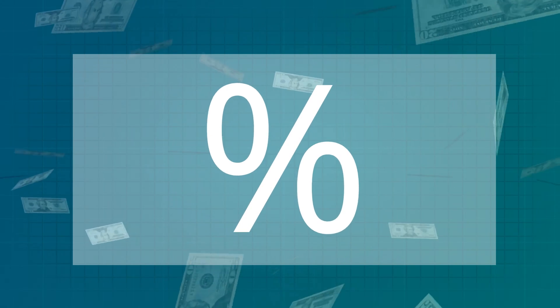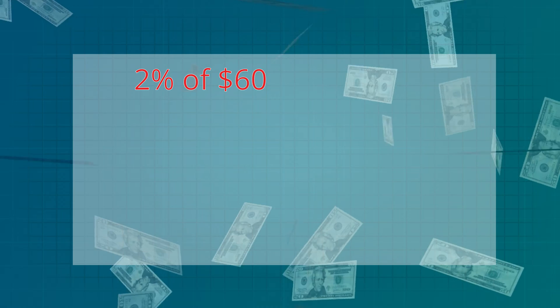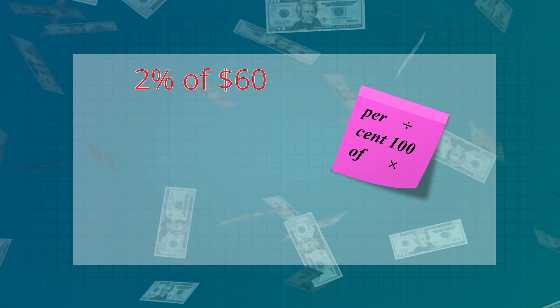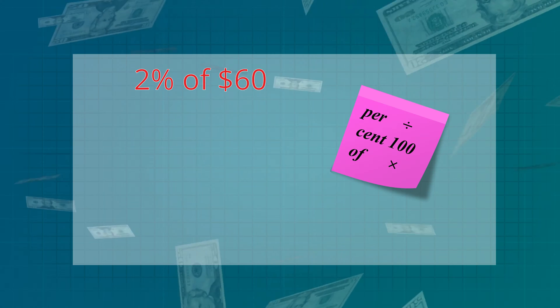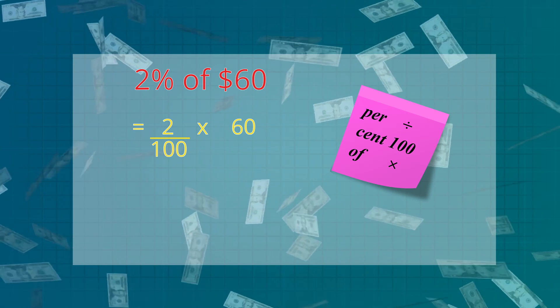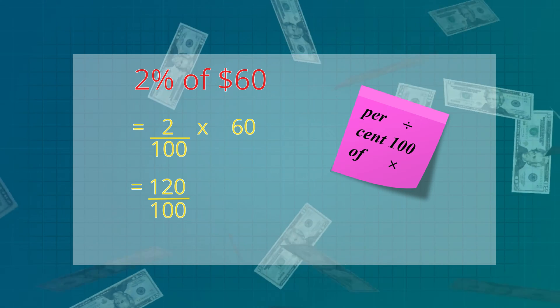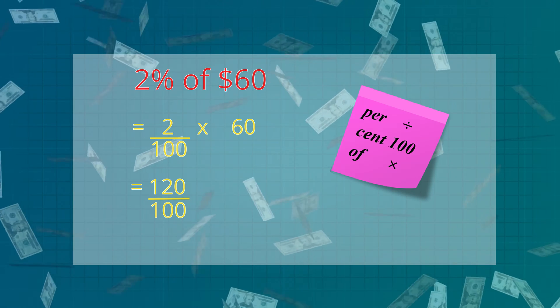So what is a percentage? It is a fraction in hundreds. Let's learn how to find a percentage of an amount of money, say two percent of sixty dollars. With percentages, 'per' means divide, 'cent' means one hundred, and 'of' means multiply. So two percent of sixty is two divided by one hundred, multiplied by sixty. First multiply the top numbers: two multiplied by sixty is one hundred and twenty. Then divide by one hundred and you get the answer of one dollar twenty.